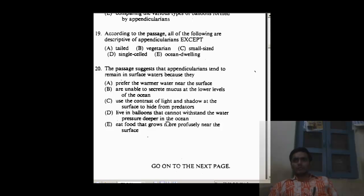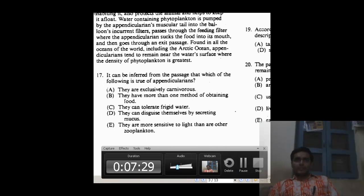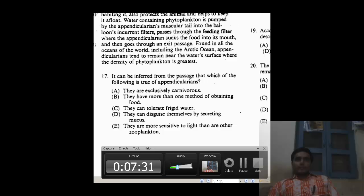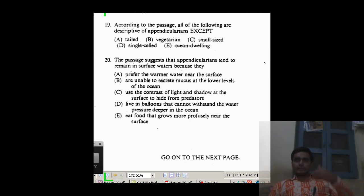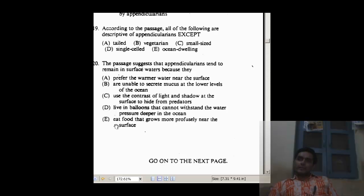Eat food that grows more profusely near the surface. When we talked about the last line, it was very specifically mentioned that found in all oceans including appendicularians tend to remain near the water surface where the density of phytoplankton is maximum. So it was about food. So the 20th option is E, eats the foods that grow more profusely near the ocean.